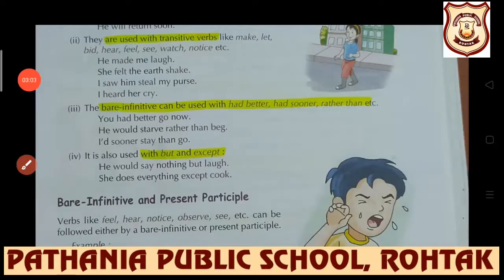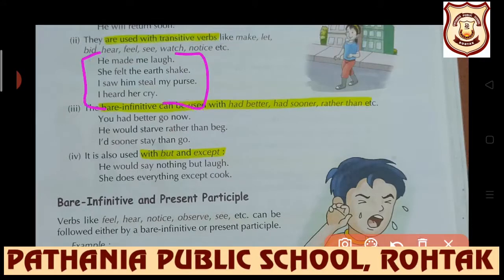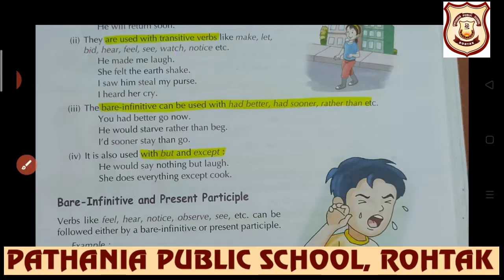Next use: bare infinitives are used with transitive verbs - verbs which have an object. Transitive verbs like 'make', 'let', 'bid', 'hear', 'feel', 'see', 'watch', 'notice', etc. With such verbs, bare infinitive is used. Examples: 'He made me laugh', 'She felt the earth shake', 'I saw him steal my purse', 'I heard her cry.' So bare infinitive is used with transitive verbs.